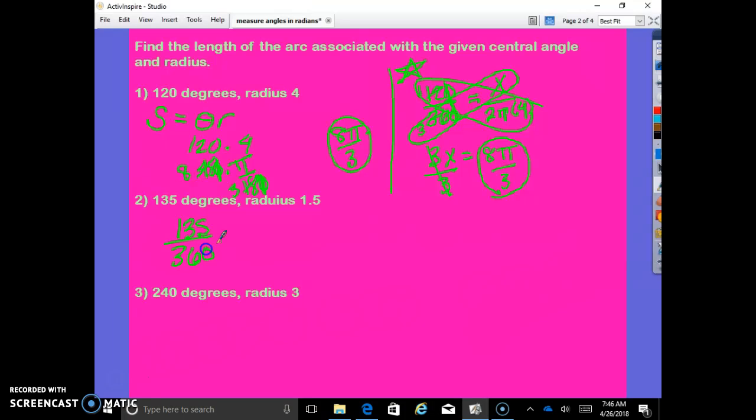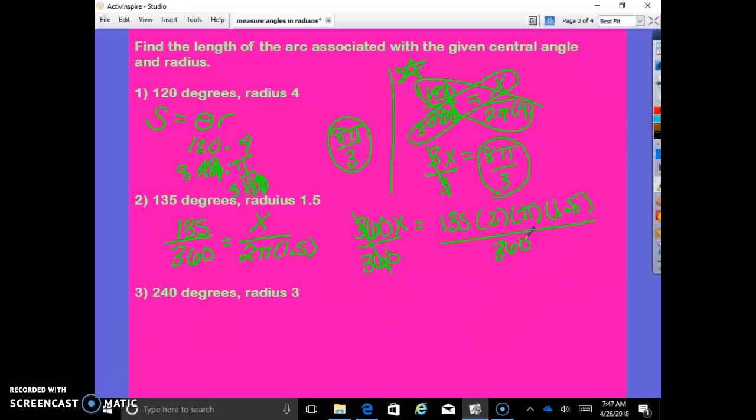So, proportions. 135 out of 360 equals what portion of the circumference out of the whole circumference? 2 pi r. Cross products and solve. Can we reduce this first just to make life a little bit easier? Or, if you're using a calculator, if this is the calculator section, you don't even need to bother. You can just do the multiplication. On a calculator section, you would just go like this. Equals 135 times 2 times pi times 1.5. Divide by 360 to get x by itself.